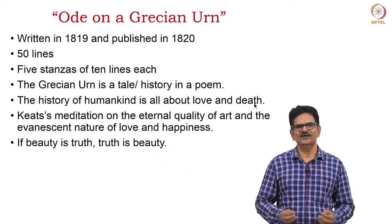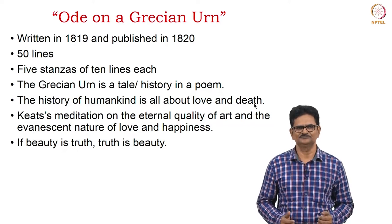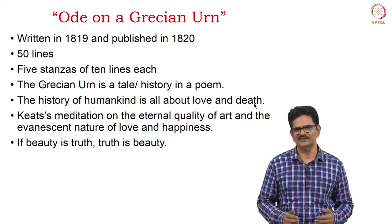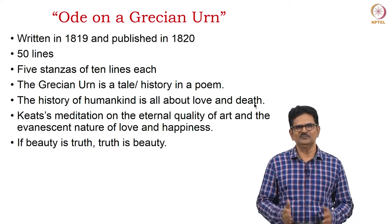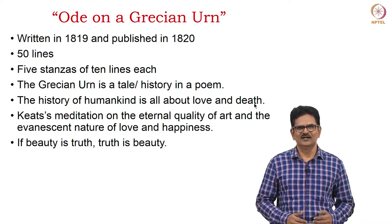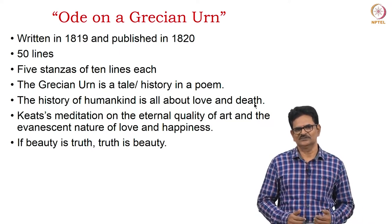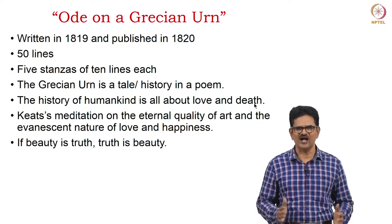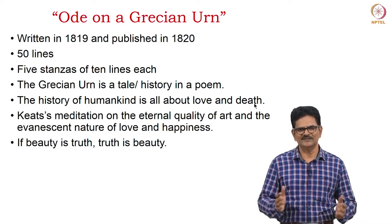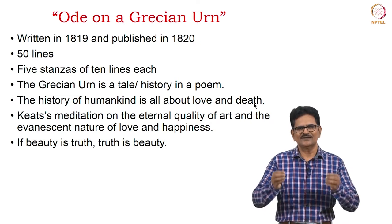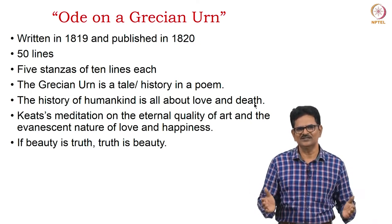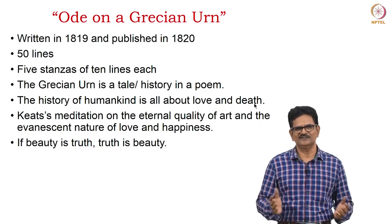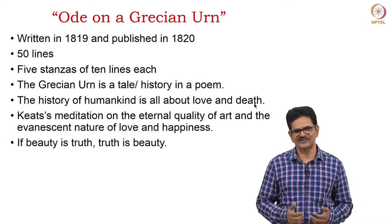Now let's understand a few background details about this poem, 'Ode on a Grecian Urn.' Keats wrote this poem in 1819 and published it in 1820. It has five stanzas, each stanza having ten lines. This poem is actually a tale — it's a history. It deals with the history of humankind and tells about love and death. This poem is a meditation on the eternal quality of art and the evanescent nature of love and happiness. This temporal love and happiness is captured eternally in art form on this urn, which motivated Keats to write this immortal poem. The essence of this poem is: 'Beauty is truth, truth is beauty' — and that's all we need to know, according to Keats.